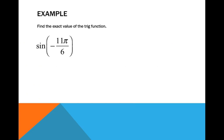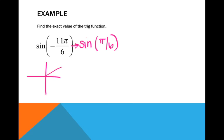Let's work through a problem: sine of negative 11 pi over 6. For negative angle measurements, find a positive coterminal angle first. So I take negative 11 pi over 6 and add 2 pi to it, which gives me pi over 6. So what I'm looking at is sine of pi over 6. Now pi over 6 is in the first quadrant, so my reference angle is also pi over 6.